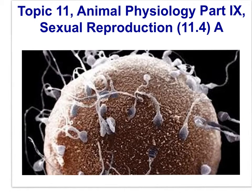IB Bio Topic 11 Part 9, Sexual Reproduction A for HL students only, will have its focus on male reproductive anatomy and physiology, specifically the process of sperm formation known as spermatogenesis. The essential idea is that sexual reproduction involves the development and fusion of haploid gametes.